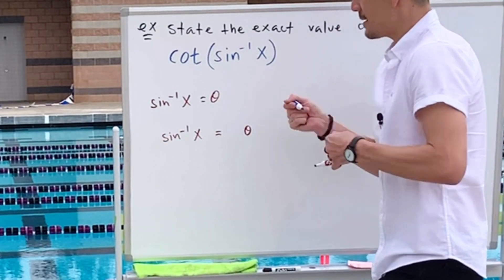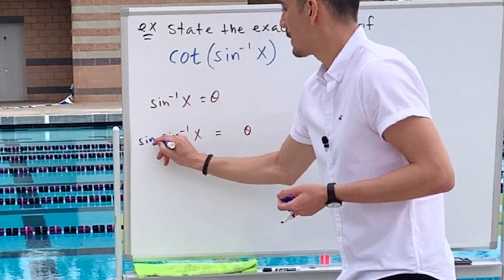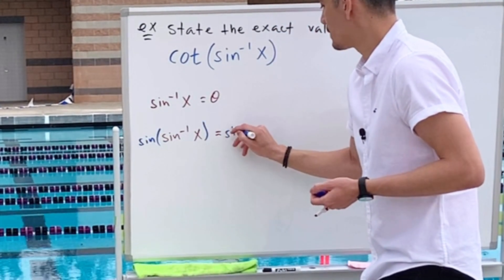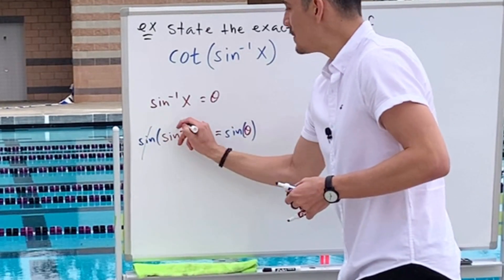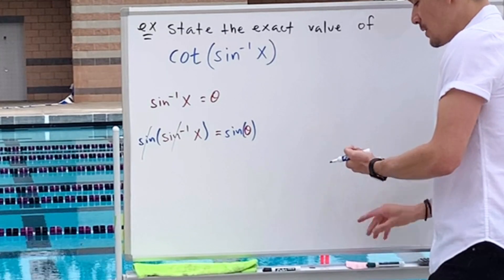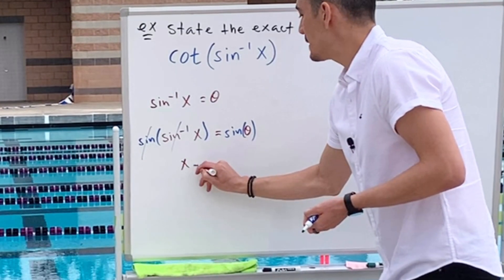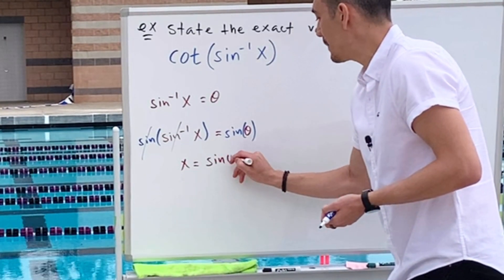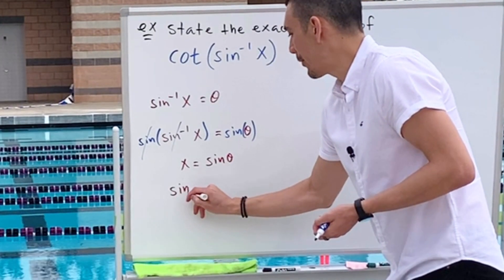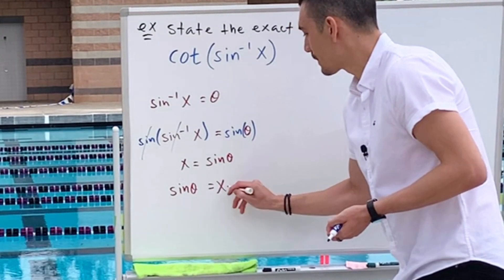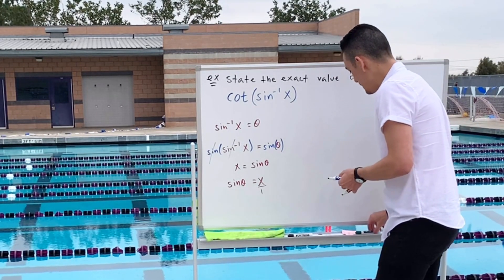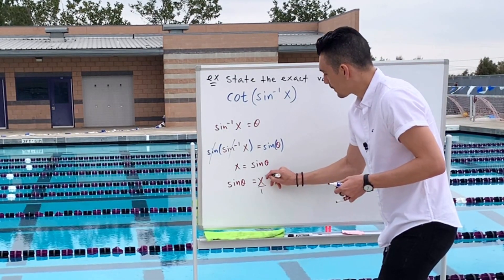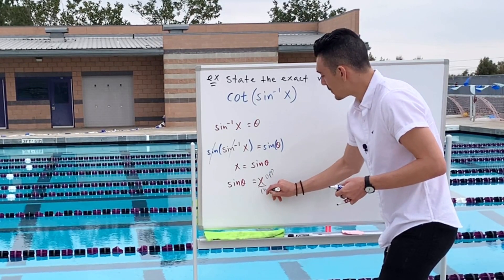And this time, we will take the sine of both sides. Because we know that these knock out. And so we have x equals sine of theta. Reverse the order. Why not? Look at it as x over 1. Because you know that sine is opposite over hypotenuse.